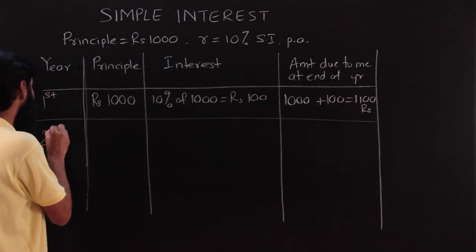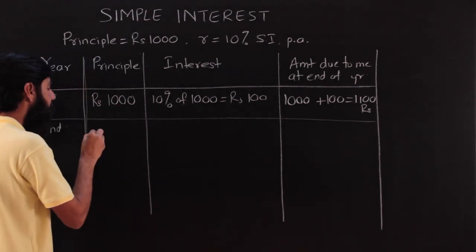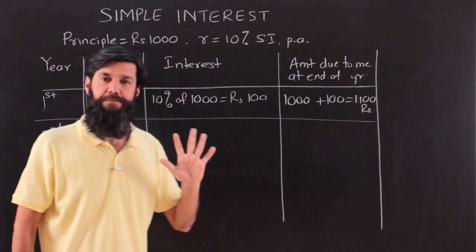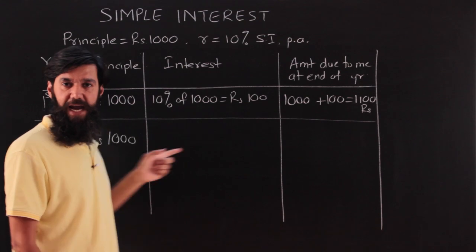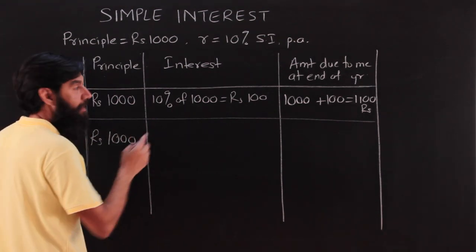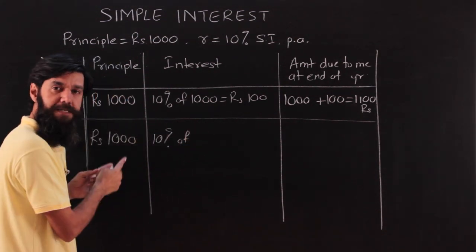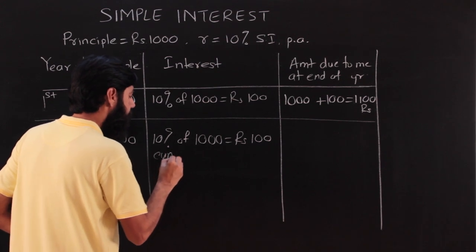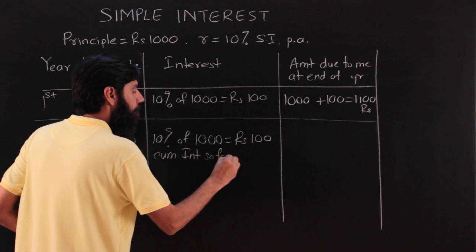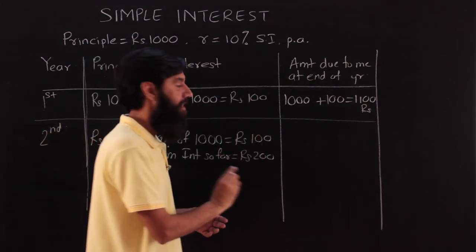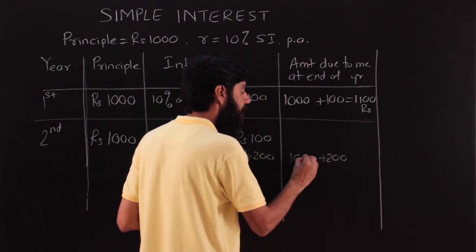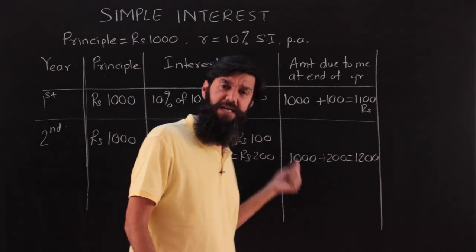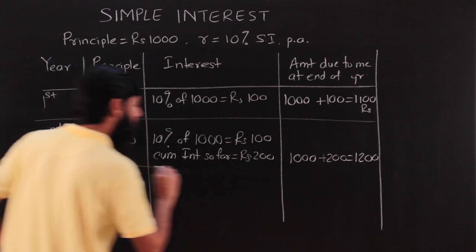Coming to the second year, if I decide to continue, the bank is going to consider the principal as rupees 1000 itself — this is the meaning of simple interest. The interest is again 10 percent of 1000, which is rupees 100. So the cumulative interest so far is 200 rupees — 100 in the first year and 100 in the second year. The amount due to me is 1200.